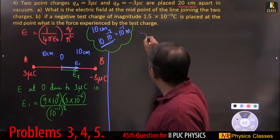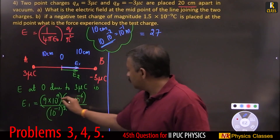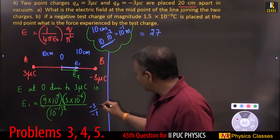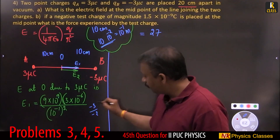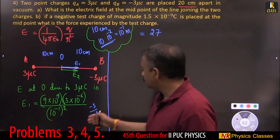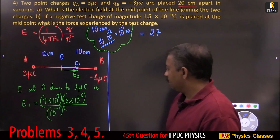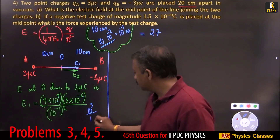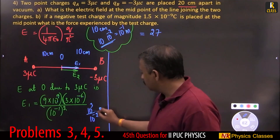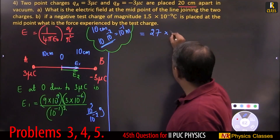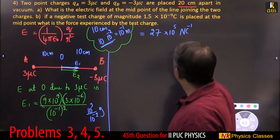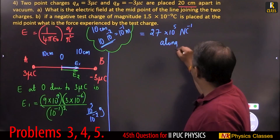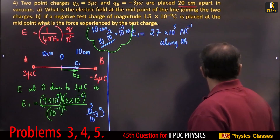So 9 times 3 is 27. Then 10 to the power 9 times 10 to the power minus 6 is 10 to the power 3; divided by 10 to the power minus 2 gives 10 to the power 5. Therefore E1 equals 27 times 10 to the power 5 Newton per coulomb, directed along OB.